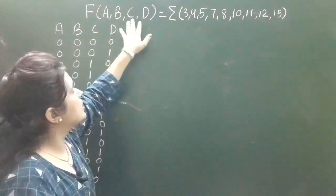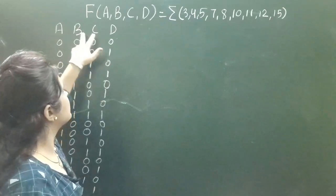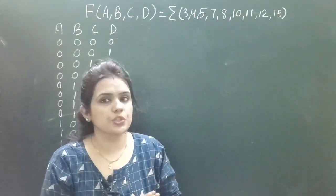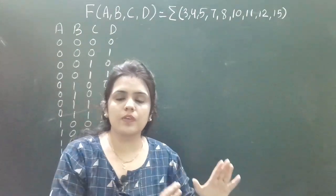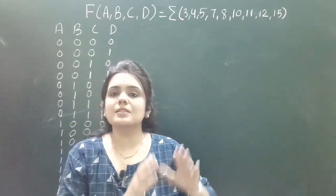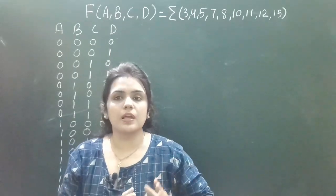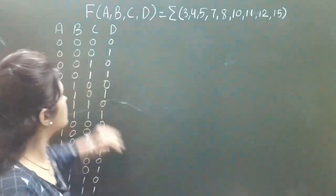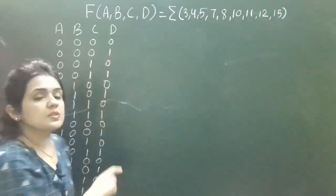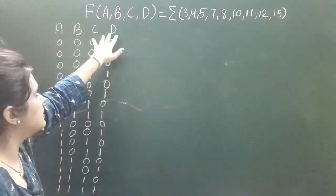This is a 4-variable Boolean function. F is the output and A, B, C, D are the 4 input variables. Since there are 4 variables, there are a total of 16 possible combinations — values 0 through 15.